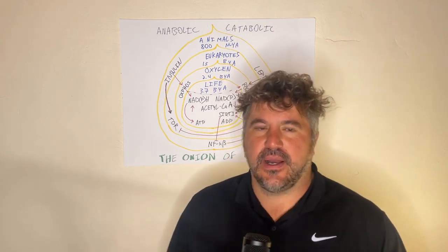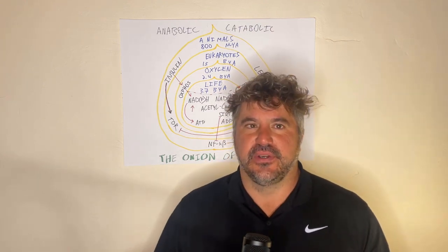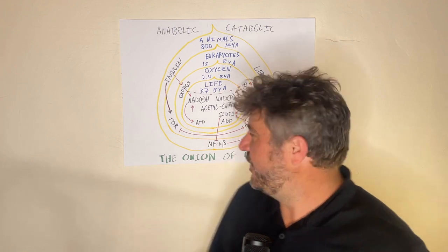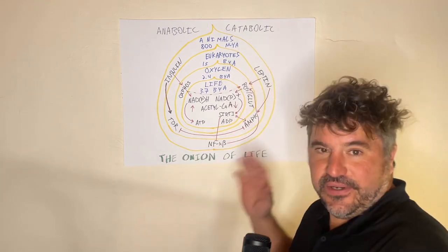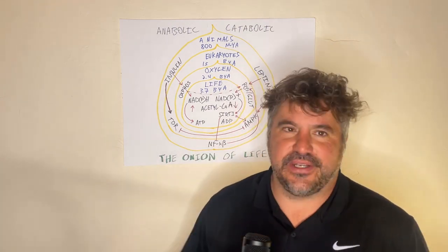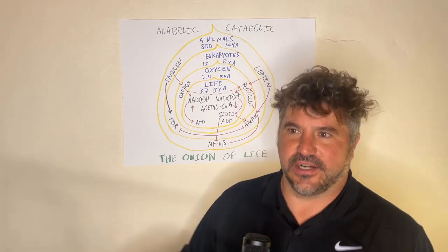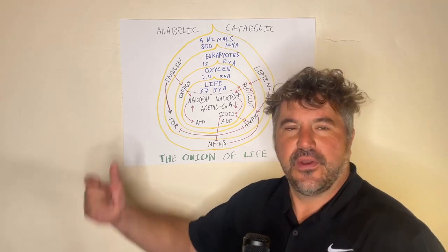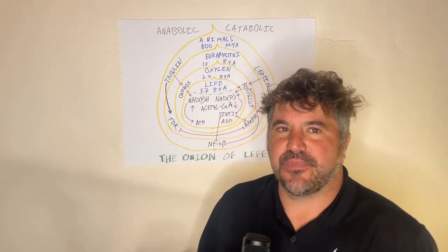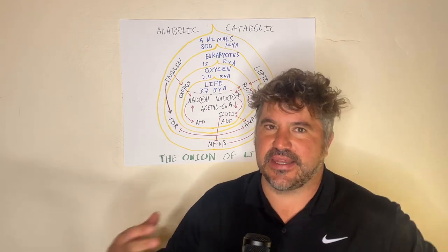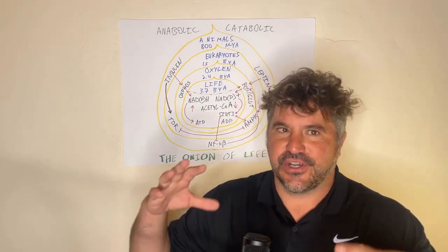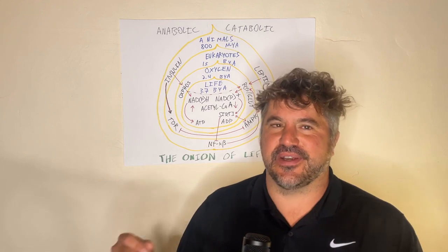In this video, I'm going to introduce a kind of theoretical topic called the onion of life. And in follow videos, we're going to do some real concrete stuff of why this matters, why it's important, and why it's helpful when you want to think about biological problems to kind of cut through some of the complexity.